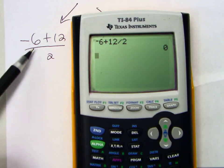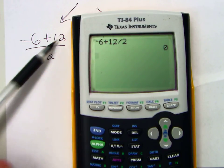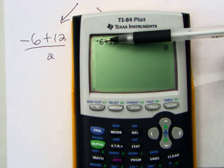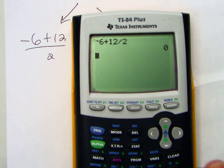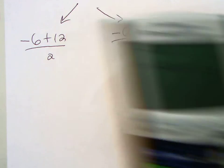Before you divide. It's not negative 6 plus 12 over 2. Look at this. This is negative 6 plus 12 over 2. 12 over 2 is 6. No, you need parentheses around the top.